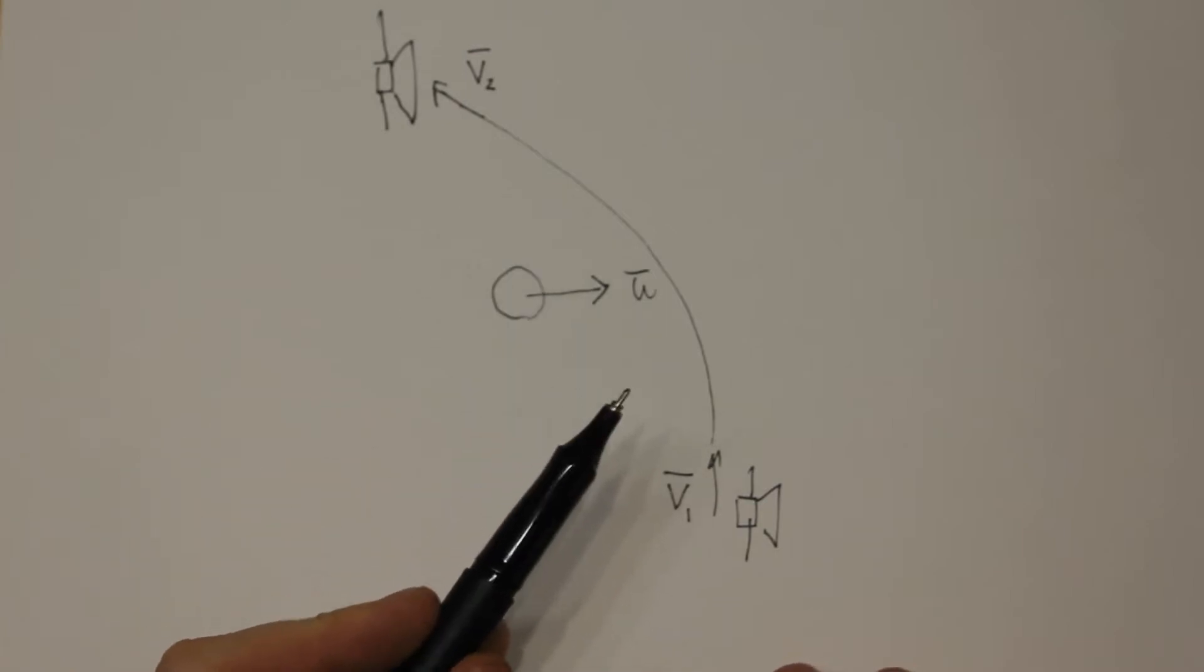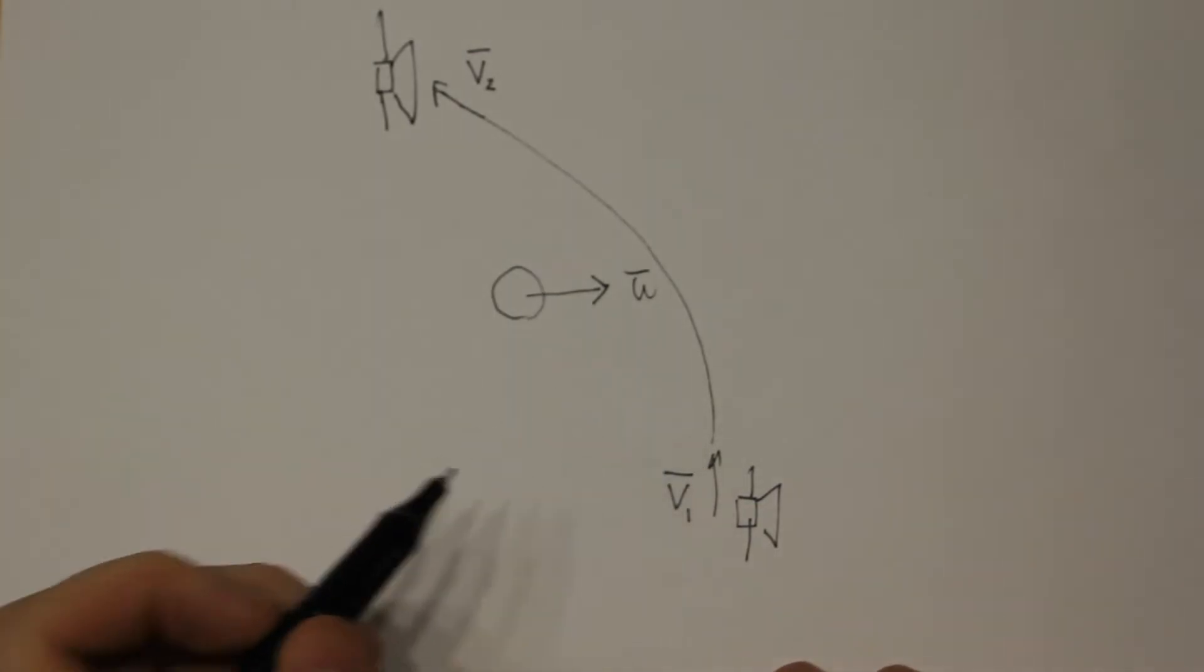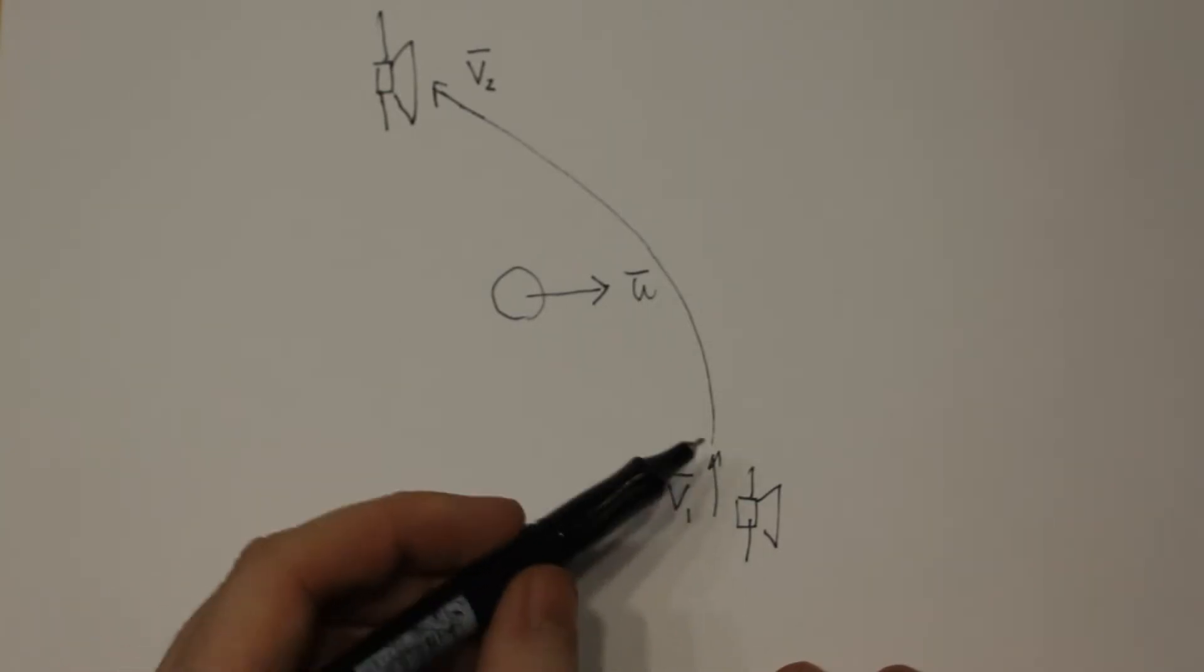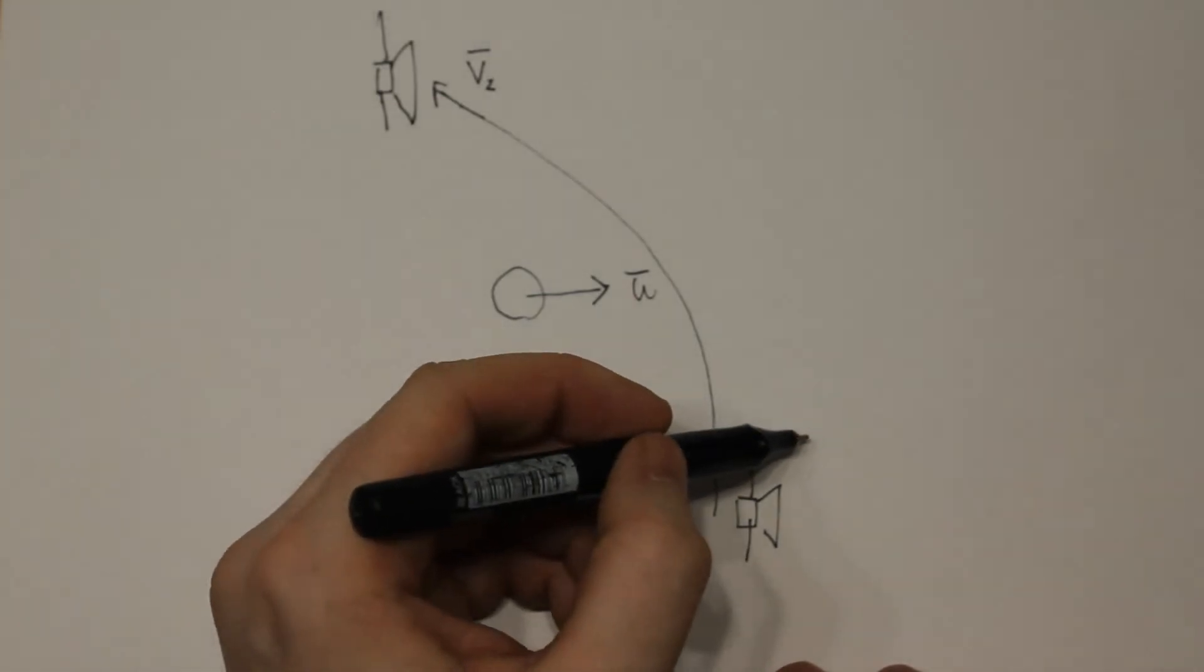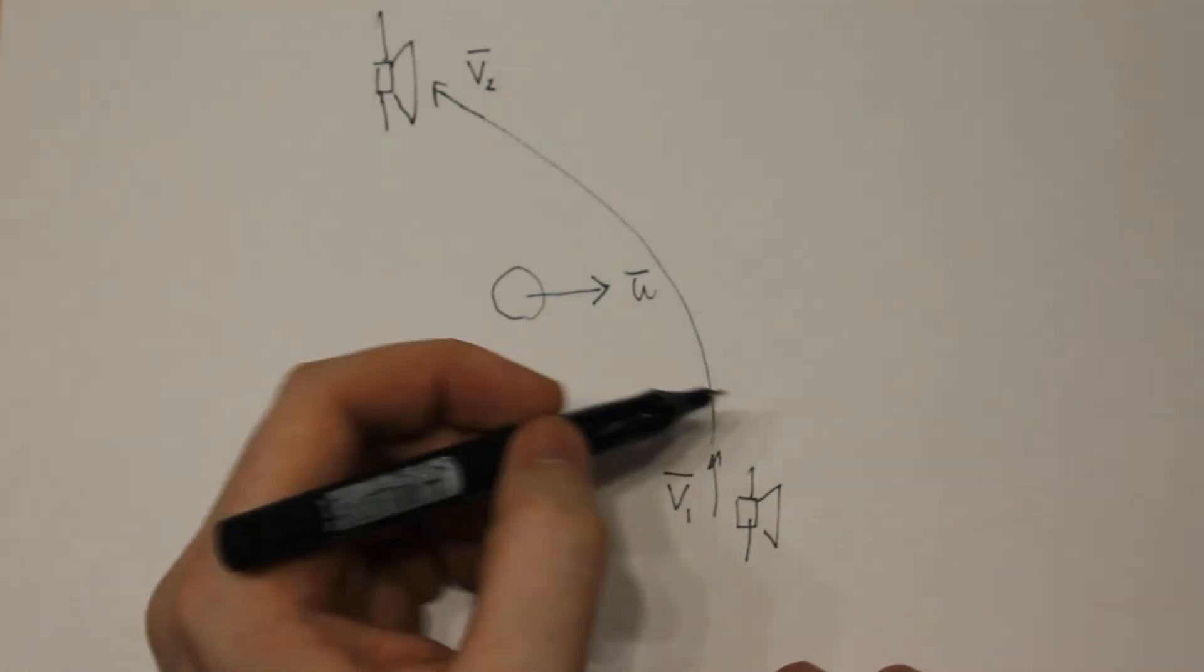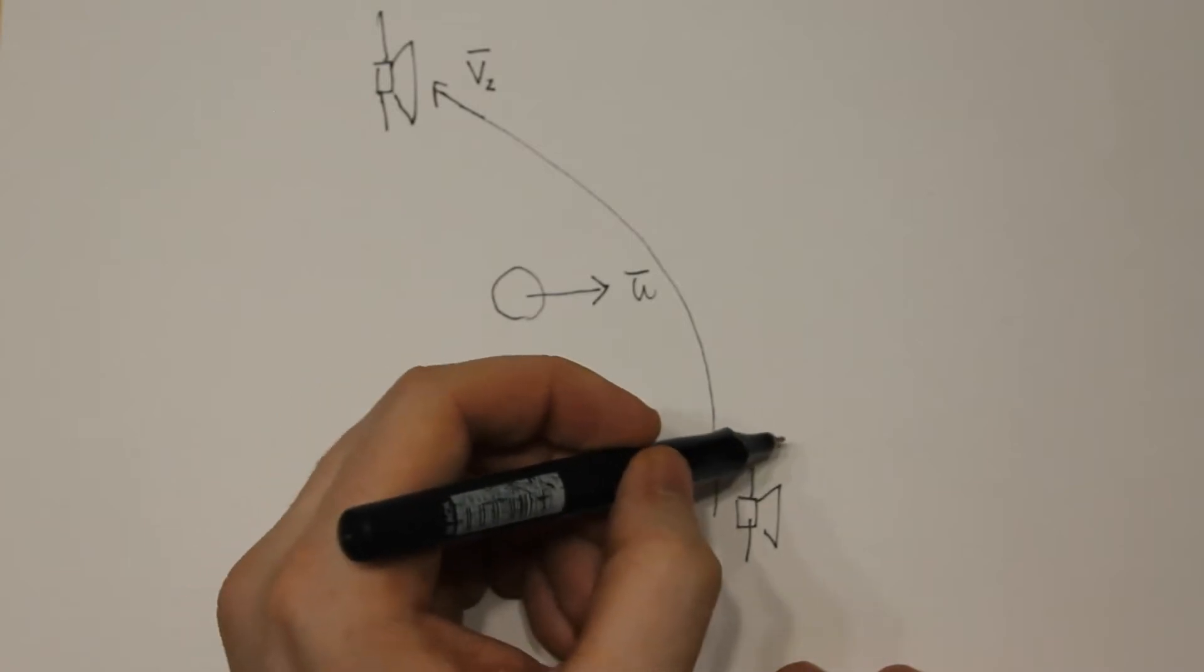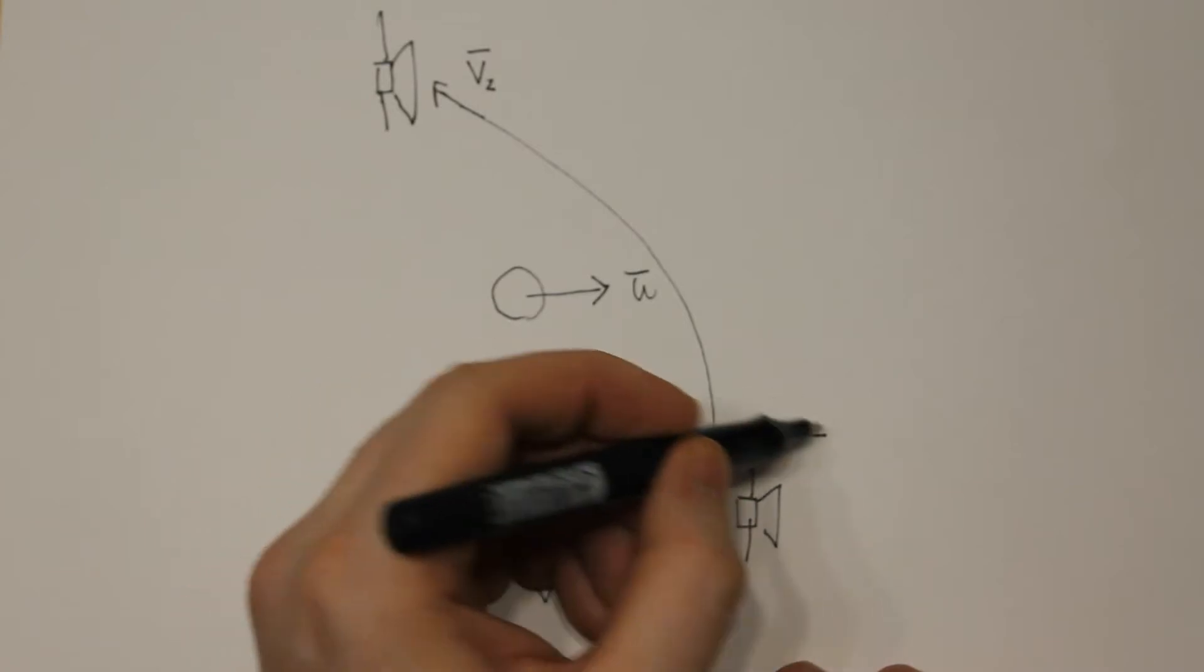So let's see what happens with our velocity here. Now initially again, from an outside observer that's observing this setup, once we're down here we can then add these two vectors up.